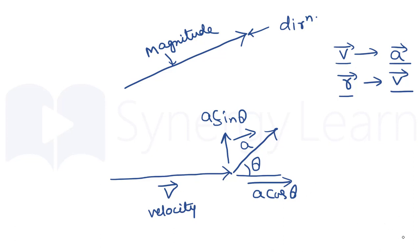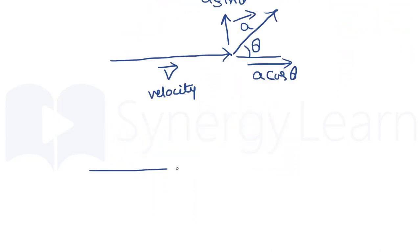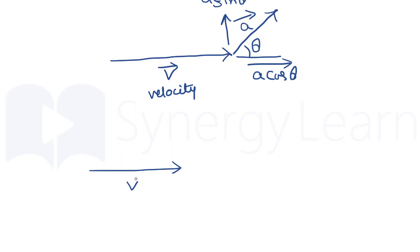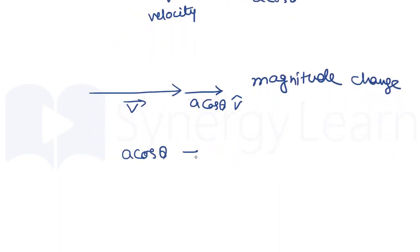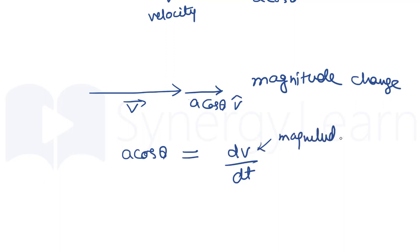As we can see, the quantity A cos theta is along the vector, so A cos theta will be responsible for magnitude change. That is, A cos theta will be equal to dV/dt, where V represents only the magnitude of velocity, which we call speed. Magnitude of velocity is speed.